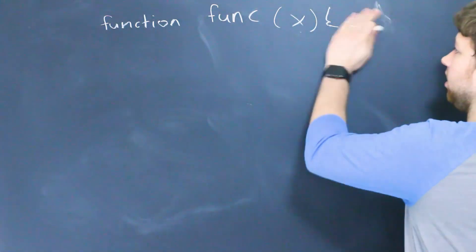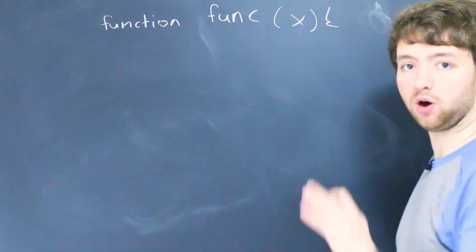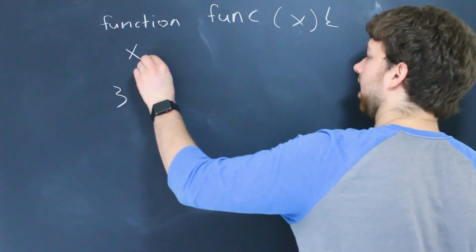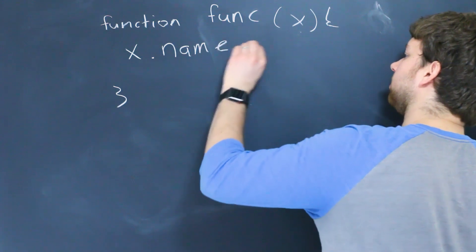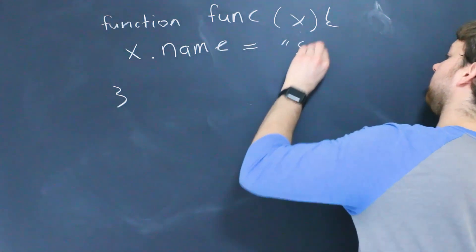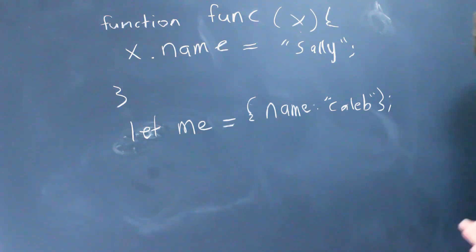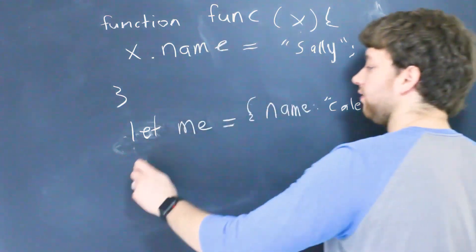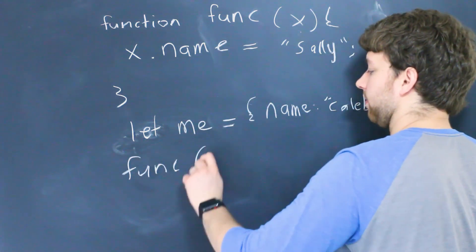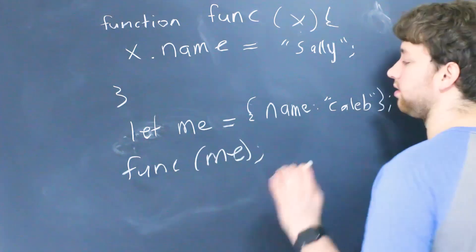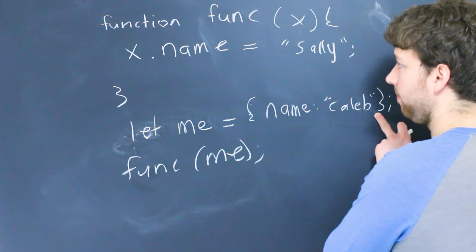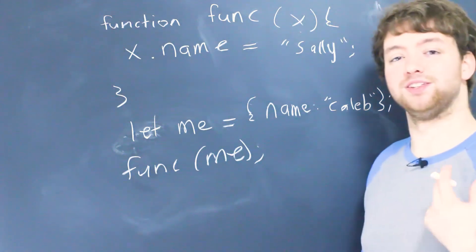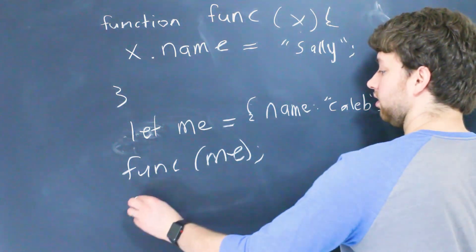So let's just go through an example here we have this function func and it takes one parameter here and what we're going to do is we're going to say X.name has the value Sally and then we have an object literal here so we're creating an object and it has one property name equals Caleb and then what we'll do is we're going to call this function and we're going to pass in me. So here's what happens step by step we create that variable, the variable's name is changed to Sally so this name here is also going to be changed because they point to the same object so down here me.name is going to contain the value Sally not Caleb.